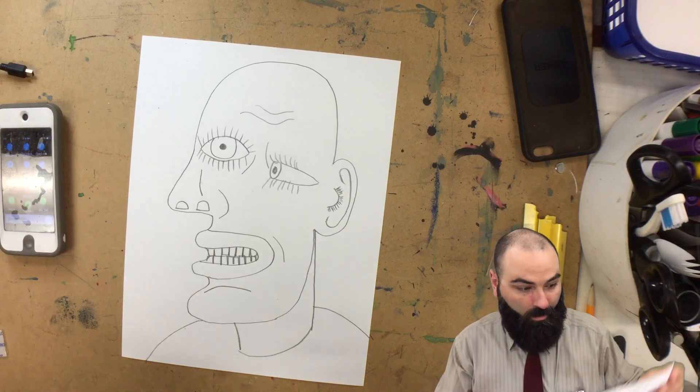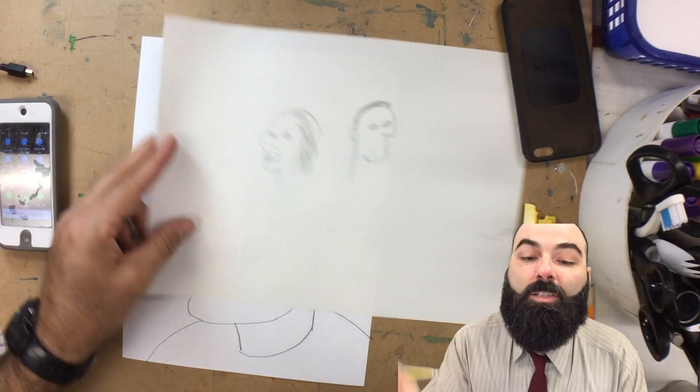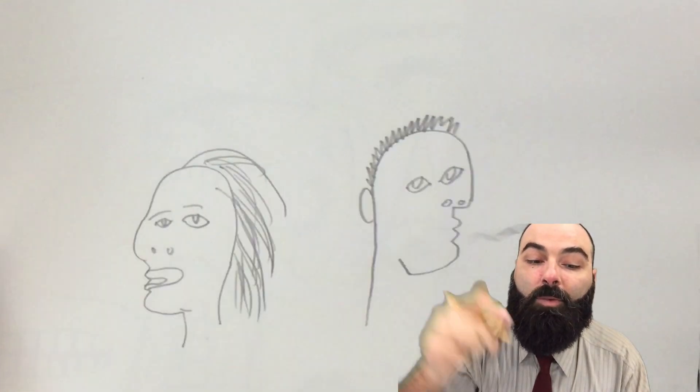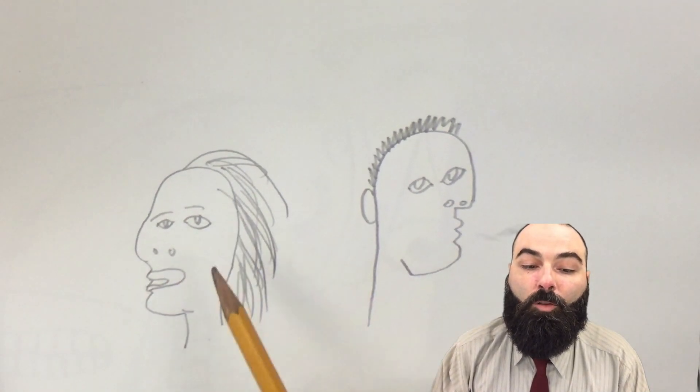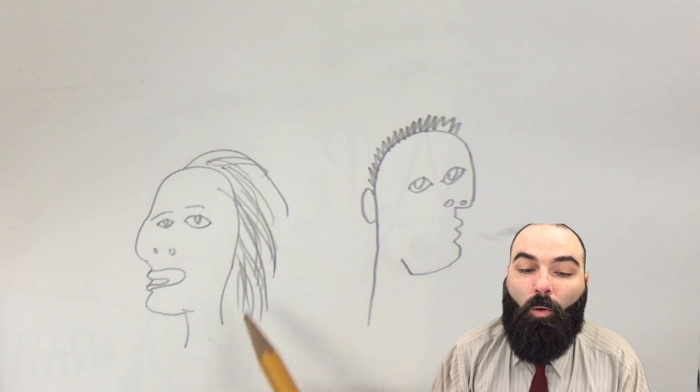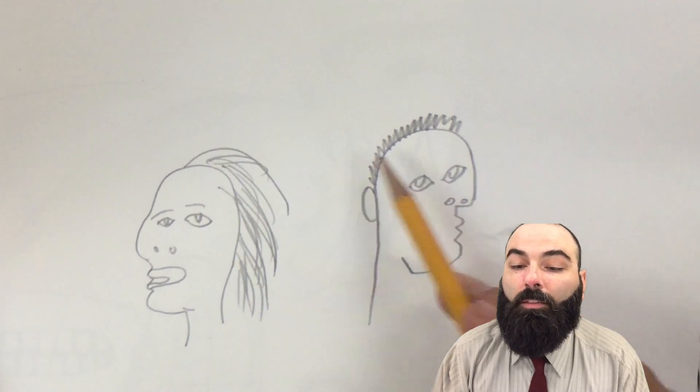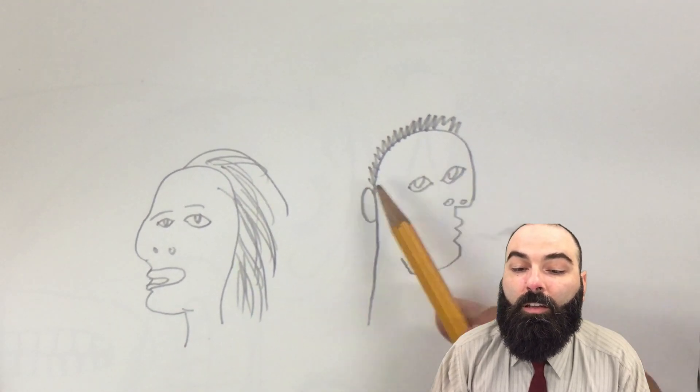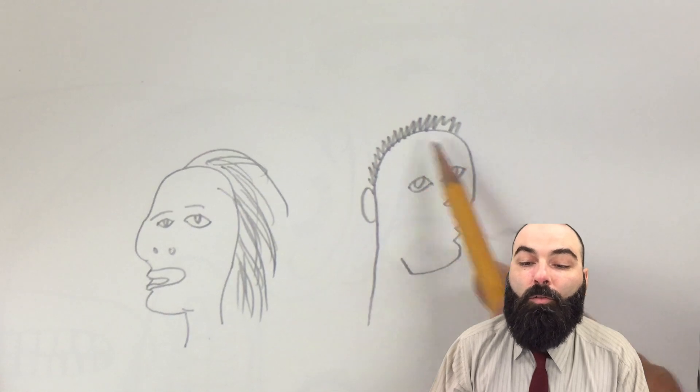Before we do the hair, let's just take a look here for a moment at some examples. If you want your cubist portrait to have girl-like hair, you want to draw the hair going long. If you want the cubist portrait to have boy-like hair, you want it to go very short.